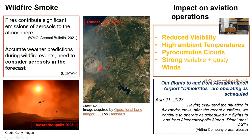Moving to wildfire smoke — even though wildfires constitute natural disasters and contribute significant aerosol emissions to the atmosphere, as far as the aviation sector is concerned, the impacts are mainly indirect. They are expressed in the values of parameters such as visibility, temperature, pyrocumulus clouds, and strong, variable, gusty winds. The aviation community is mainly interested in the values of these parameters, which are included in almost all aeronautical warnings and forecasts. Interestingly, during this summer's wildfires in Alexandroupolis and Rhodes, aircraft flying to and from those aerodromes were not that much affected.